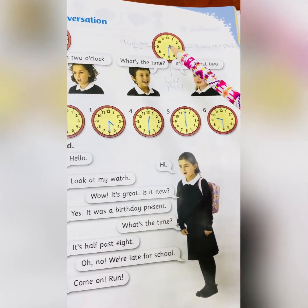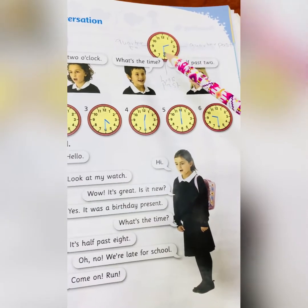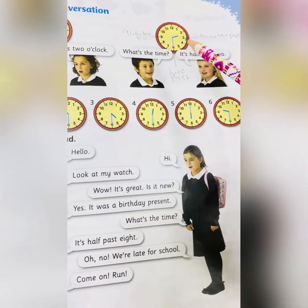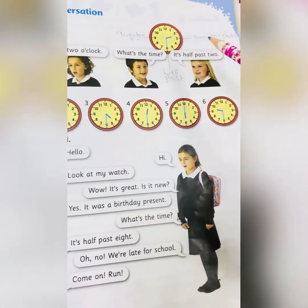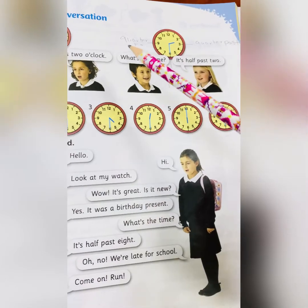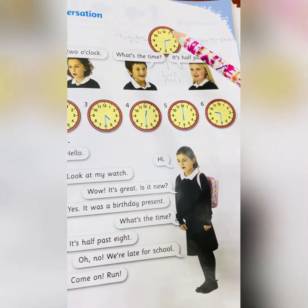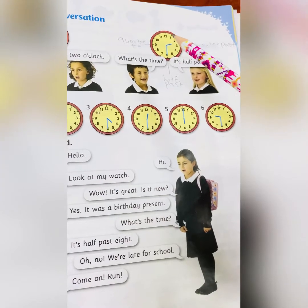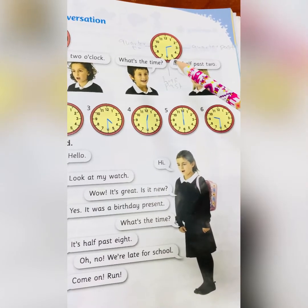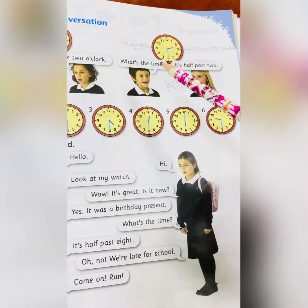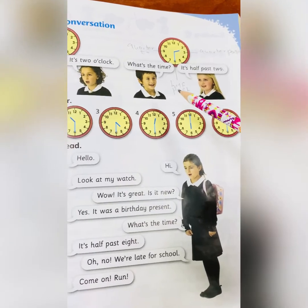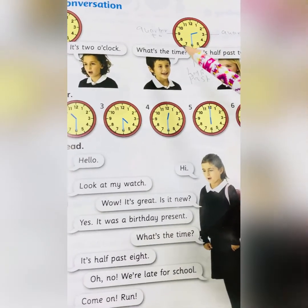Like this picture, we can say it's half past 2. So whenever the long line goes to number 6, we call it 'half past.' And whenever the long line goes to number 3, we call it 'quarter past.' Also for number 9, we call it 'quarter to.' So until the 6 it's quarter past, at 6 it's half past, and after number 6 we call it 'quarter to.'